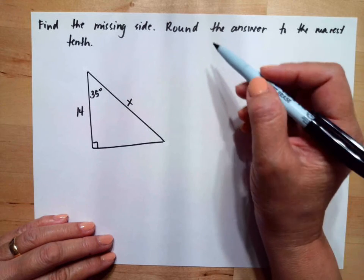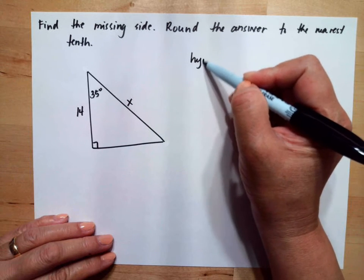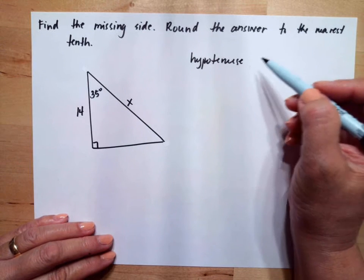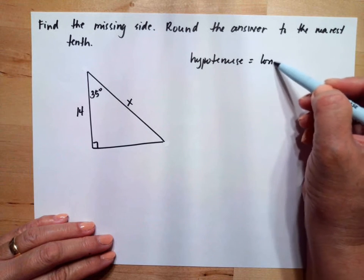The first thing we will do is identify our hypotenuse. So as we said, the hypotenuse is the longest side.